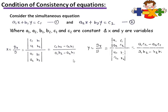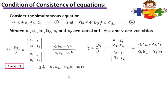Similarly, the value of y is Dy upon D. In determinant form, expanding the determinant we get (a1·c2 - a2·c1) upon (a1·b2 - a2·b1). Here Case 1 is that a1·b2 - a2·b1 is not equal to 0.